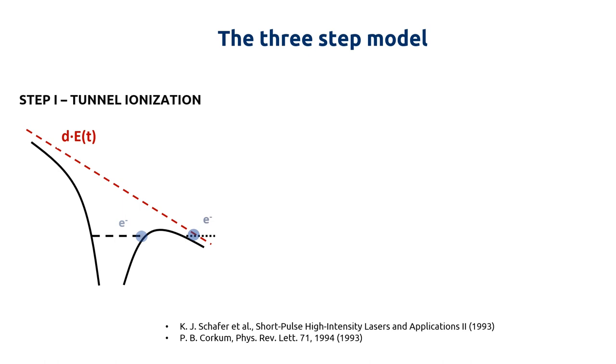In the second step, the freed electron is accelerated by the laser, firstly away from the parent ion, and then back towards it, as the external field is reversed.